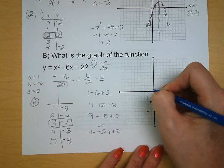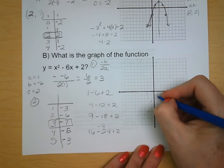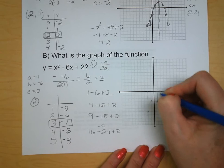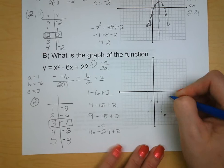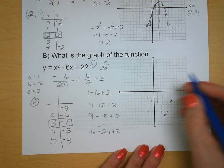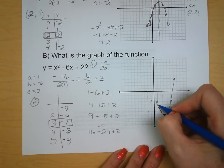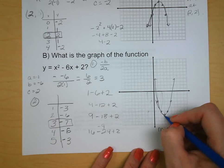We've got positive 1, negative 3. Positive 2, negative 6. Positive 3, negative 7. Positive 4, negative 6. We can see that we have a minimum, and positive 5, negative 3. We have a minimum. Our line of symmetry goes through the line x equals 3, and they are mirrored on either side.